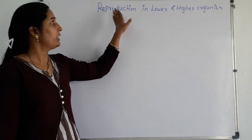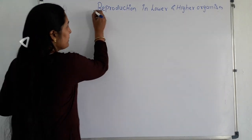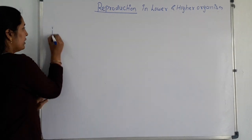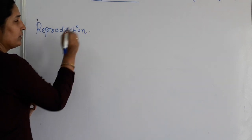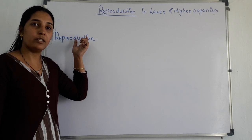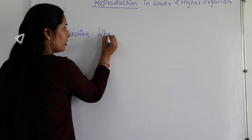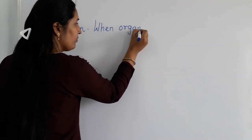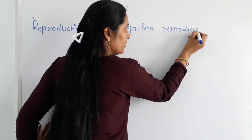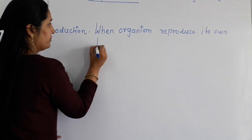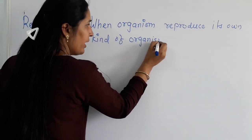Hello friends, today we are going to learn about reproduction in lower and higher organisms. First we will discuss what is meant by reproduction. There are two words: 're' and 'production.' Re means again and production means to produce. When an organism reproduces its own kind of organism, that is called reproduction.